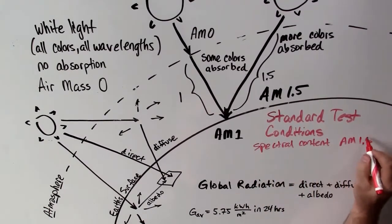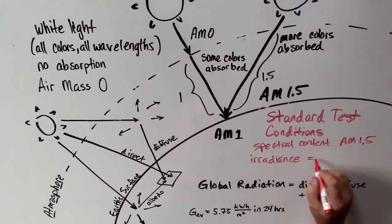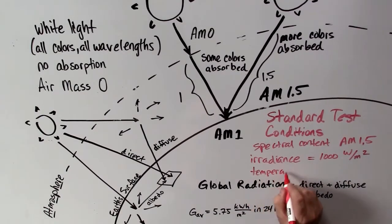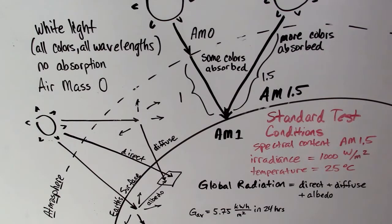The spectral content of an air mass 1.5 is the standard mixture of colors that we use when we test solar panels. The irradiance is exactly 1000 watts per square meter, and the temperature is 25 degrees C. Using these three test conditions, we can test one panel and compare it to another, apples to apples.